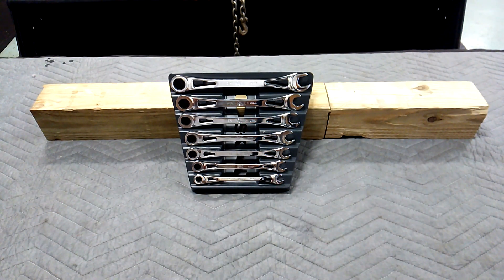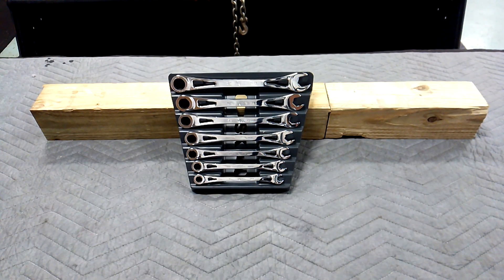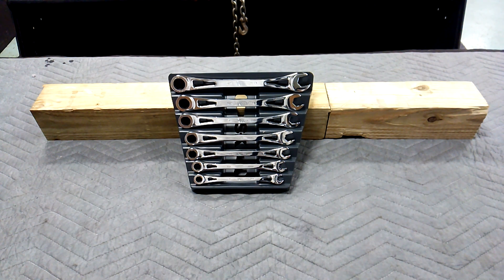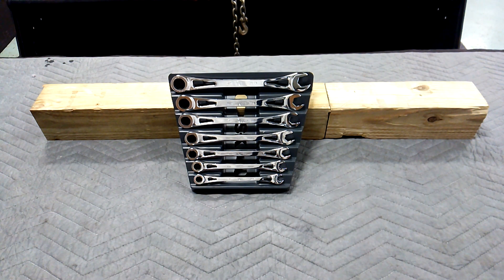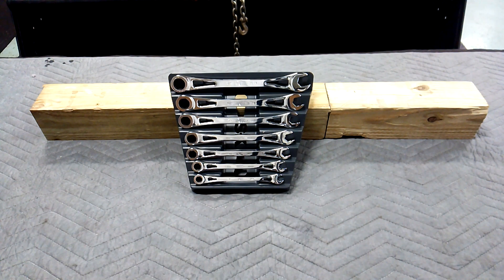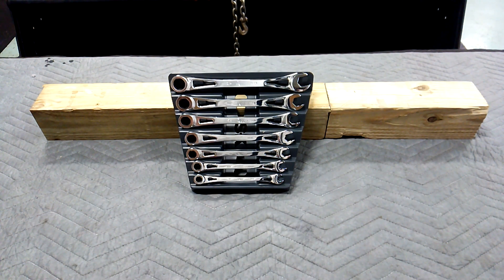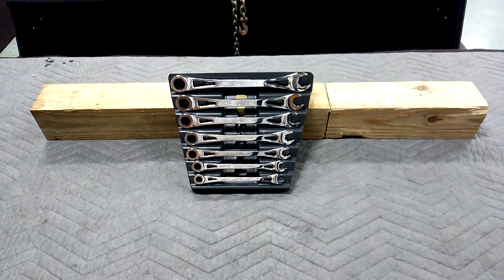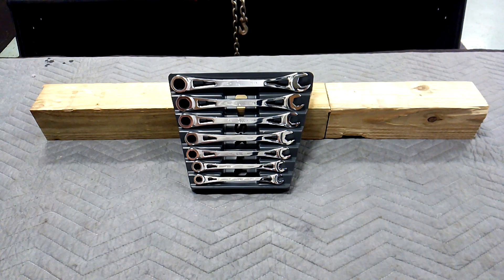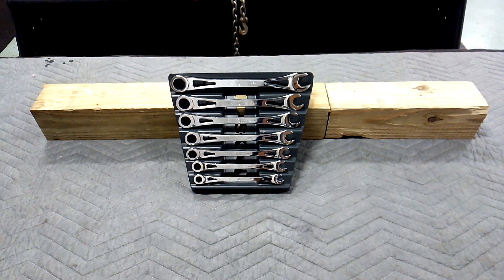Hello YouTube, continuing the ratchet wrench series, moving up the food chain. These are made by SK, they've got a six-paw design with two teeth engaged at all times, 216 positions not teeth positions. They were $240 on Amazon, seven-piece set SAE, the model number is 80049.